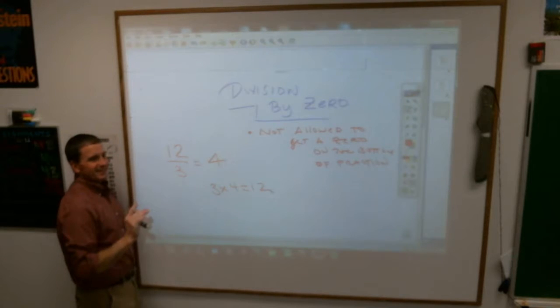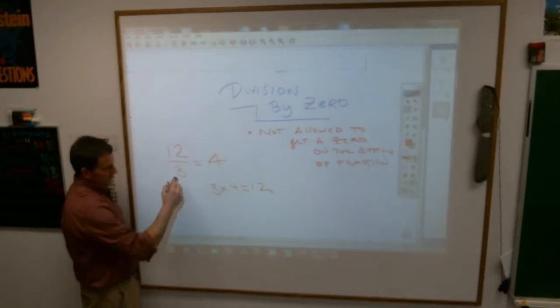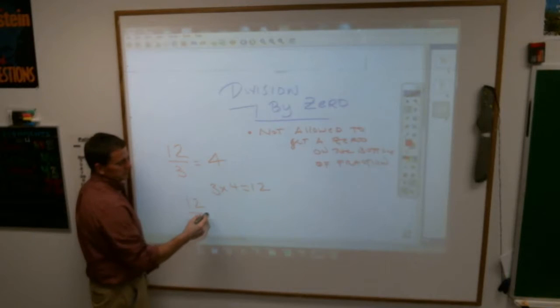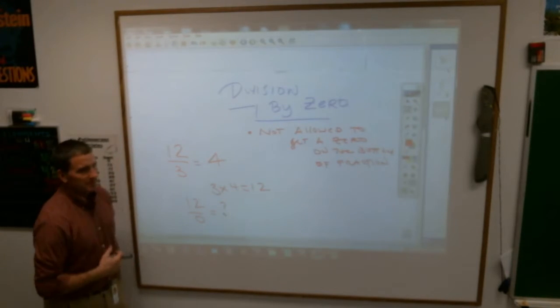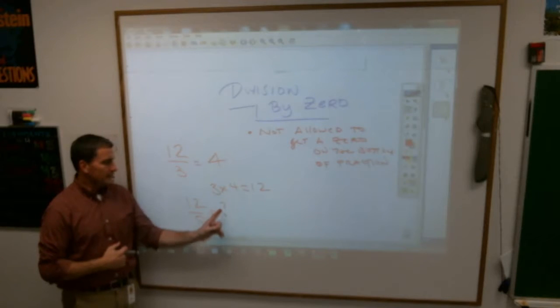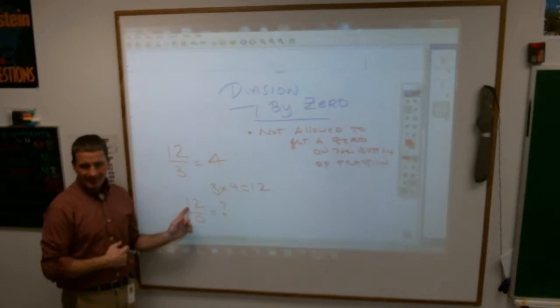Well, if you stick a zero down there, if I put twelve divided by zero equals what? You are asking somebody zero times what number gives you twelve. And it can't be done, because zero times anything is always zero.